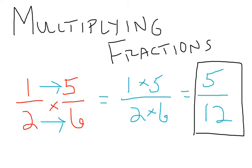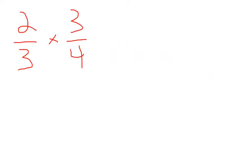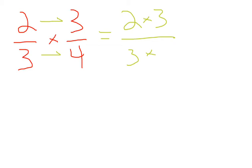So let's take a look at another example. I have 2 thirds times 3 fourths. Again, what we need to do is we just need to multiply straight across. So I'm going to have 2 times 3 over 3 times 4. 2 times 3 is 6, and 3 times 4 is 12.